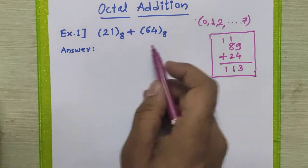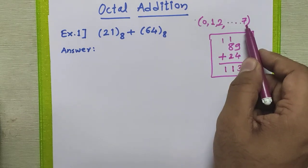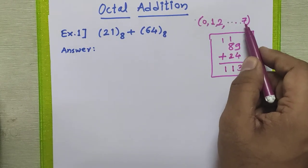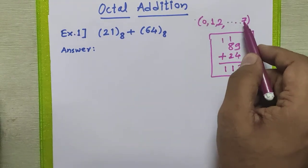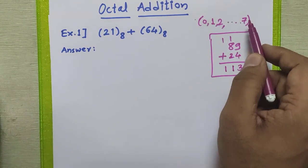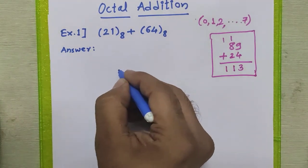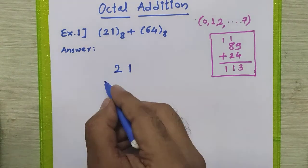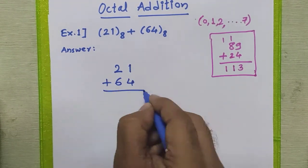Similarly, in the octal number system the last valid digit is 7, so whenever the addition of two digits exceeds 7 we have to generate a carry. We have two numbers: 21 in octal plus 64 in octal.